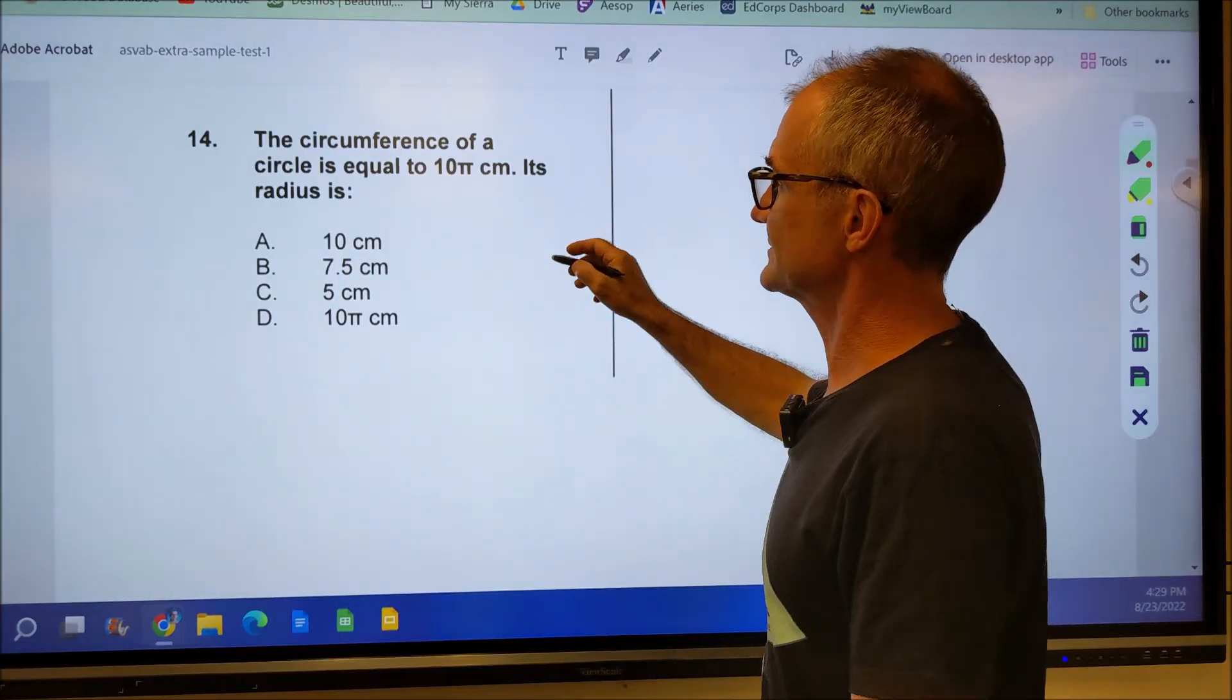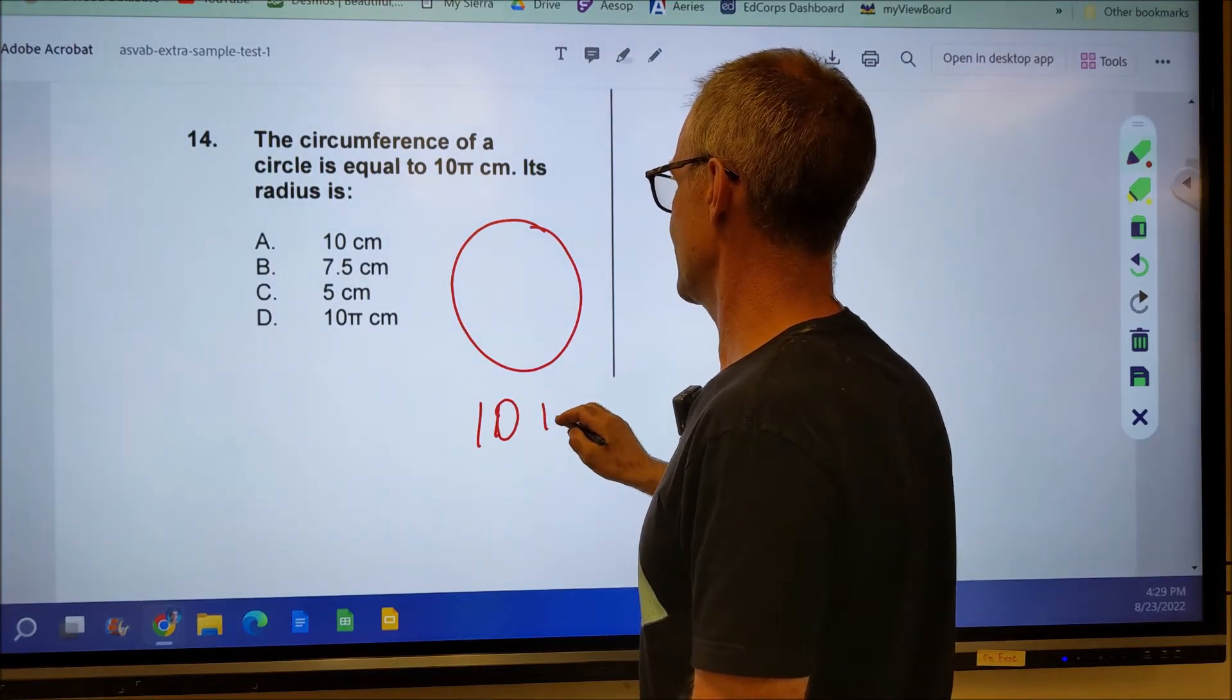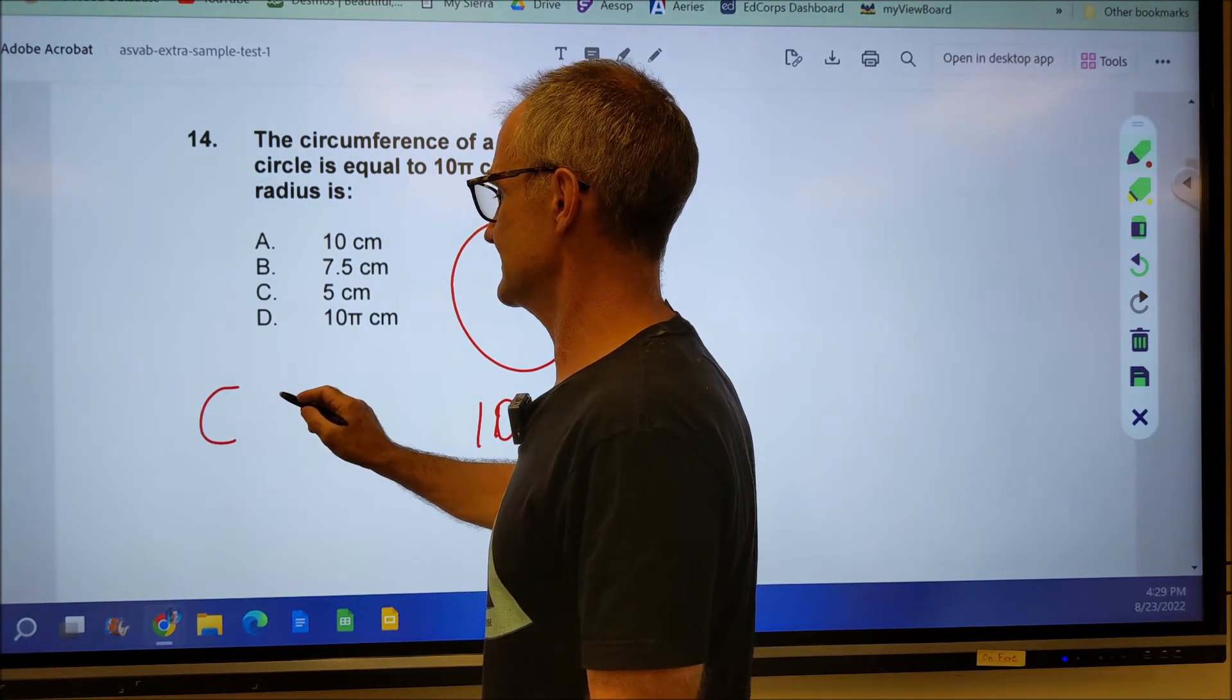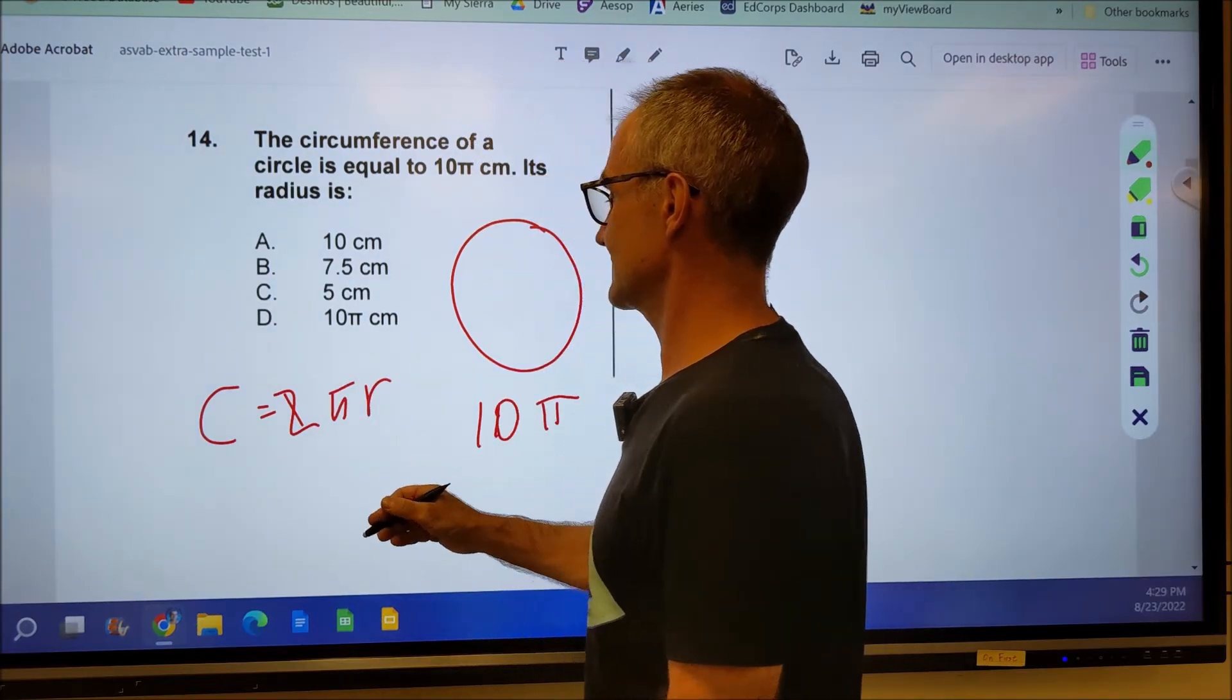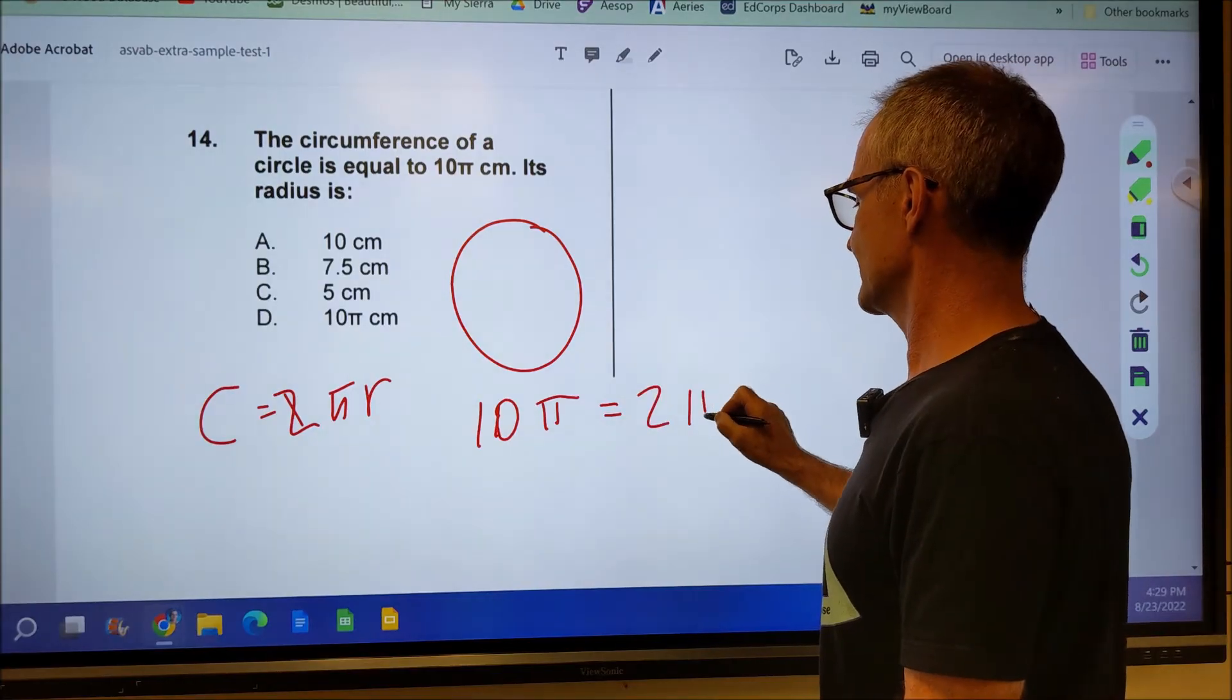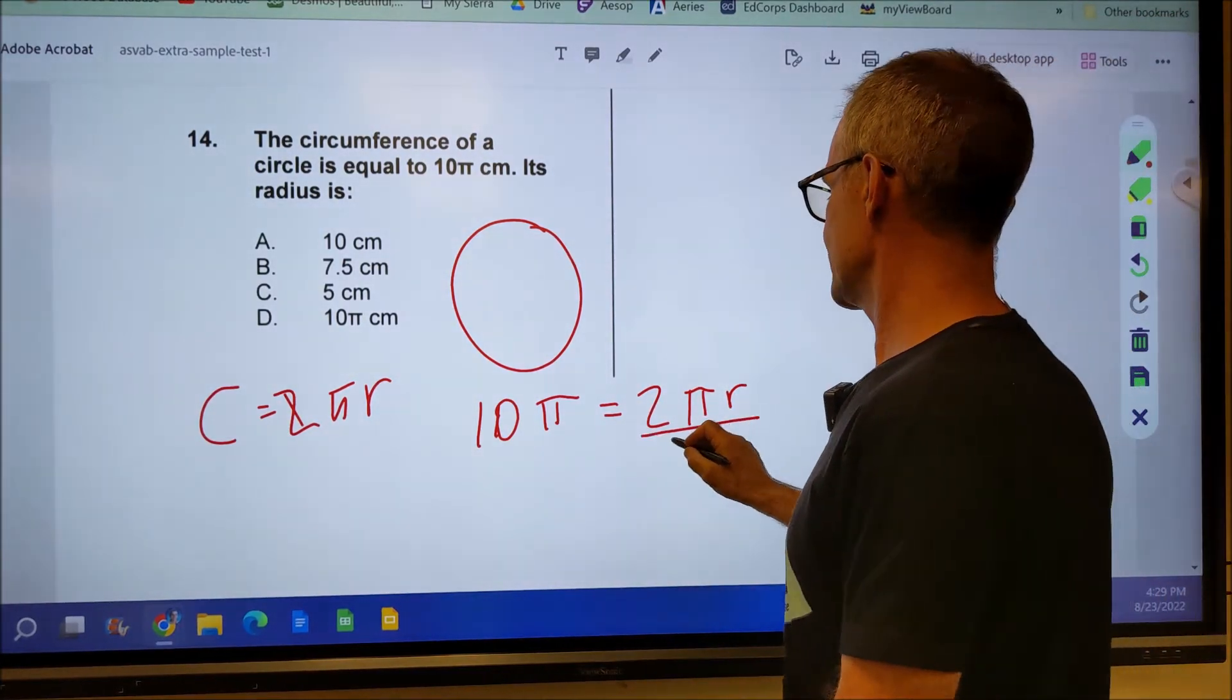Number 14, there's circumference of a circle. That's perimeter. The distance around the outside is equal to 10 pi. Its radius is, so you need to know the equation for circumference. Circumference is equal to 2 times pi times r. So if circumference is 2 pi r and the circumference is equal to 10 pi, they have to be equal to each other. So I set the 2 pi r equal to the circumference given. I want to know what the radius is.